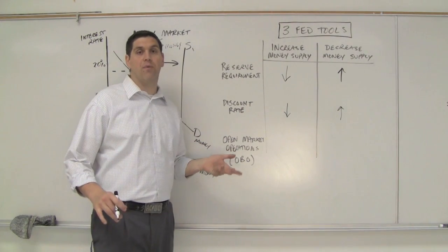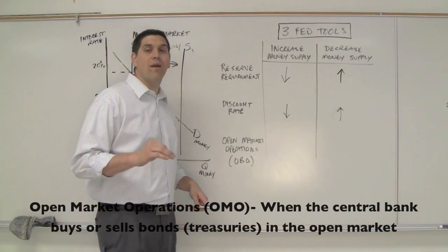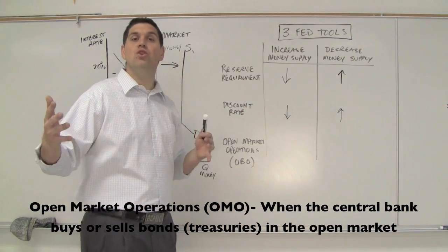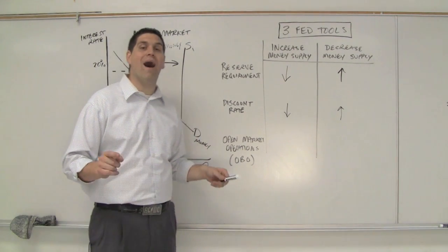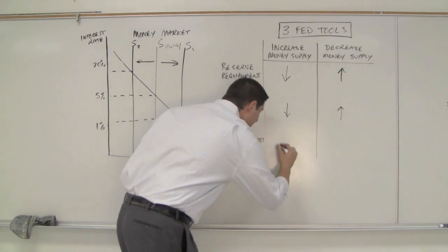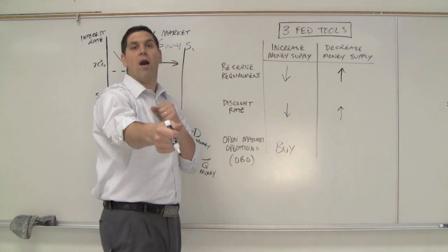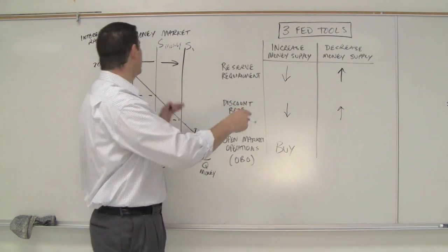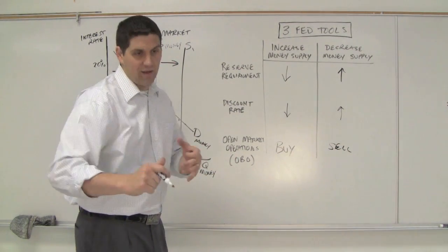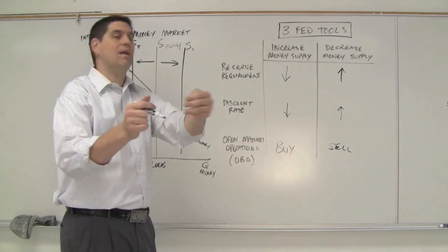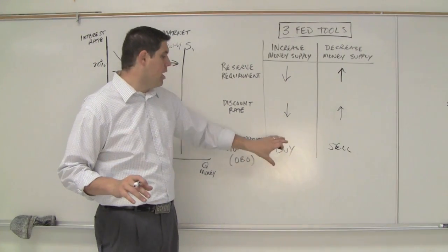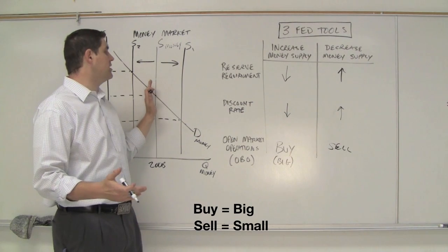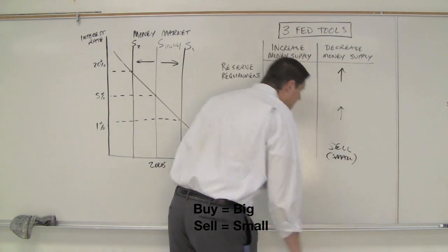The most important Fed tool is open market operations — the buying and selling of government treasuries. This is the one the Fed does most. The Fed can buy bonds back or sell them. To increase the money supply, the Fed buys bonds: they give people money and take bonds out of the system, increasing the money supply. To decrease the money supply, they sell bonds — giving out bonds and taking money out of the system. To help you remember: 'Buy Big' — if the Fed buys bonds, it makes the money supply bigger. 'Sell Small' — selling makes the money supply smaller.